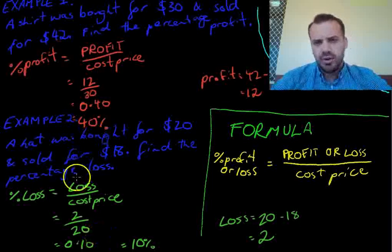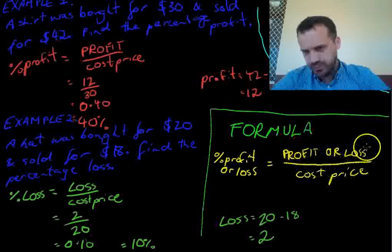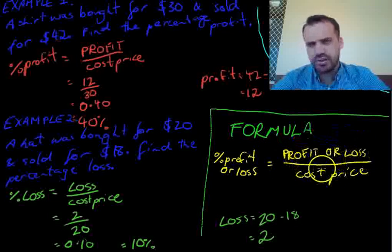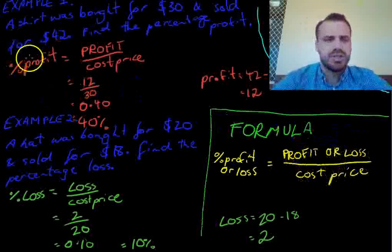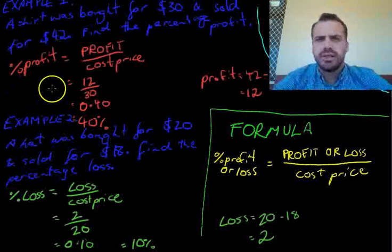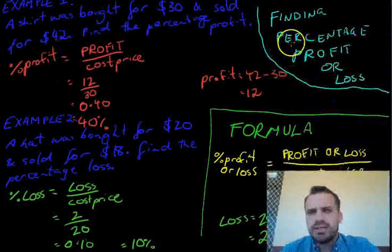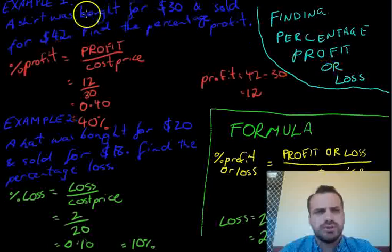So, this is profit or loss. One big formula here. Percentage profit or loss is equal to profit or loss in dollars divided by cost price. Two examples here. One where you made a profit, and one where you made a loss. That's finding percentage profit or loss. Thank you.